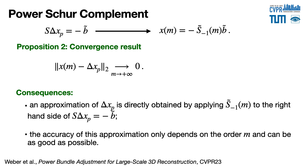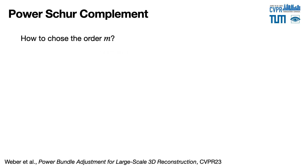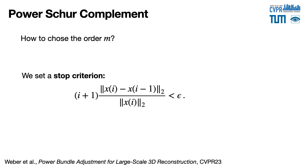This proposition has two consequences. Firstly, the approximation can be directly obtained by applying the inverse Schur complement at order M to the right-hand side of the reduced camera system. Secondly, the accuracy of this approximation can be as good as desired if we increase the order M. For a trade-off between high accuracy and fast running time, we set a stopping criterion inspired by the inexact Newton method.